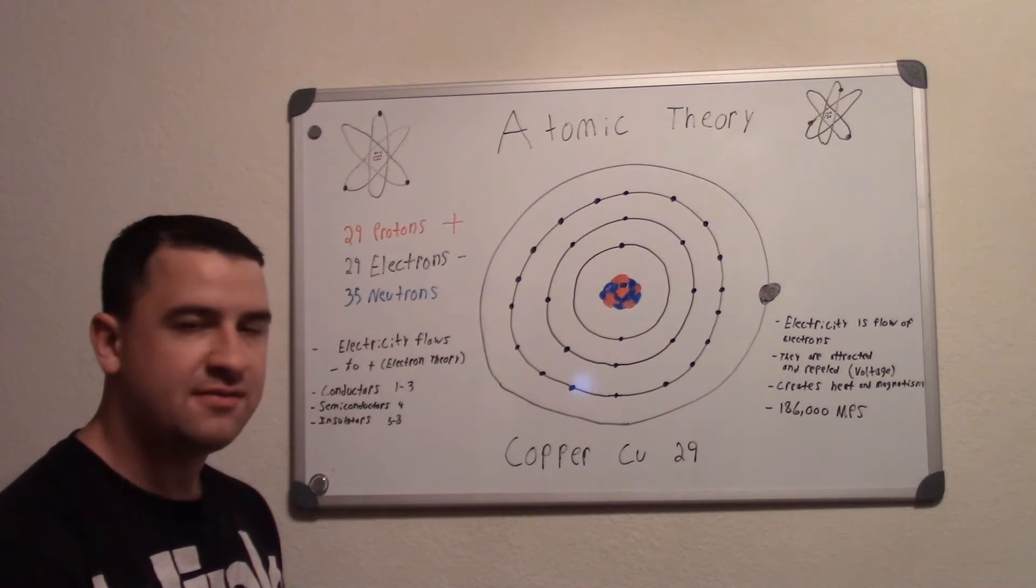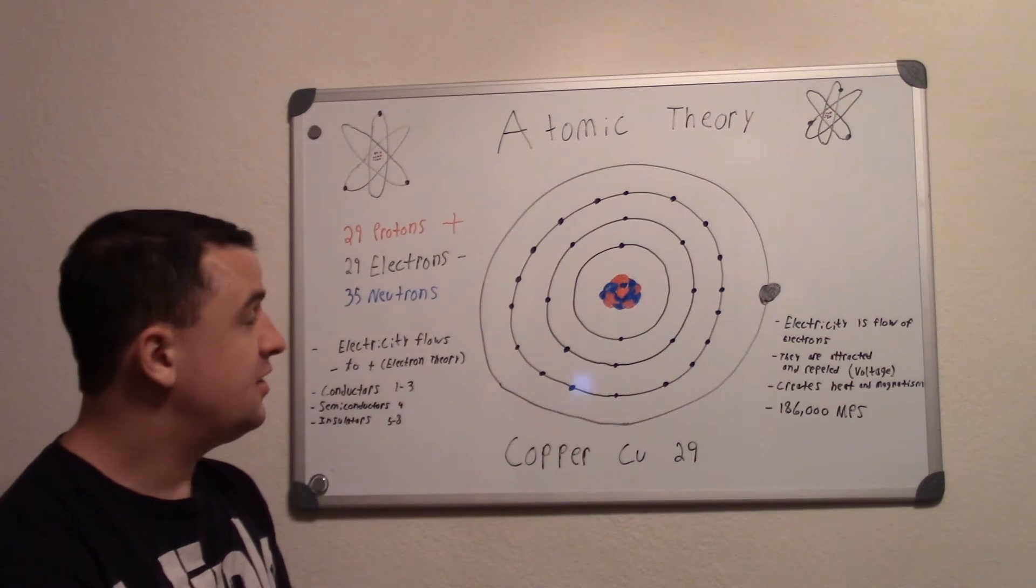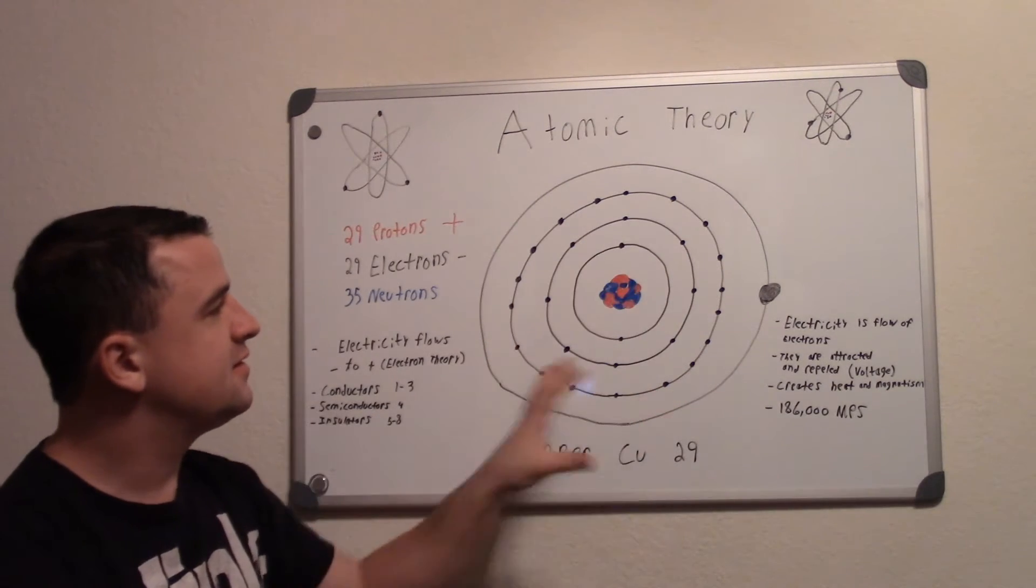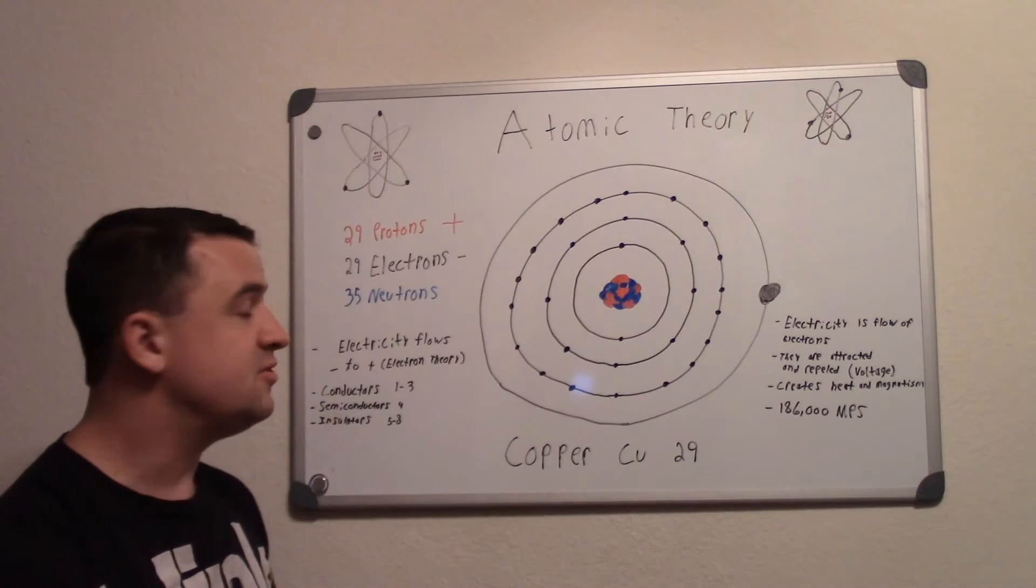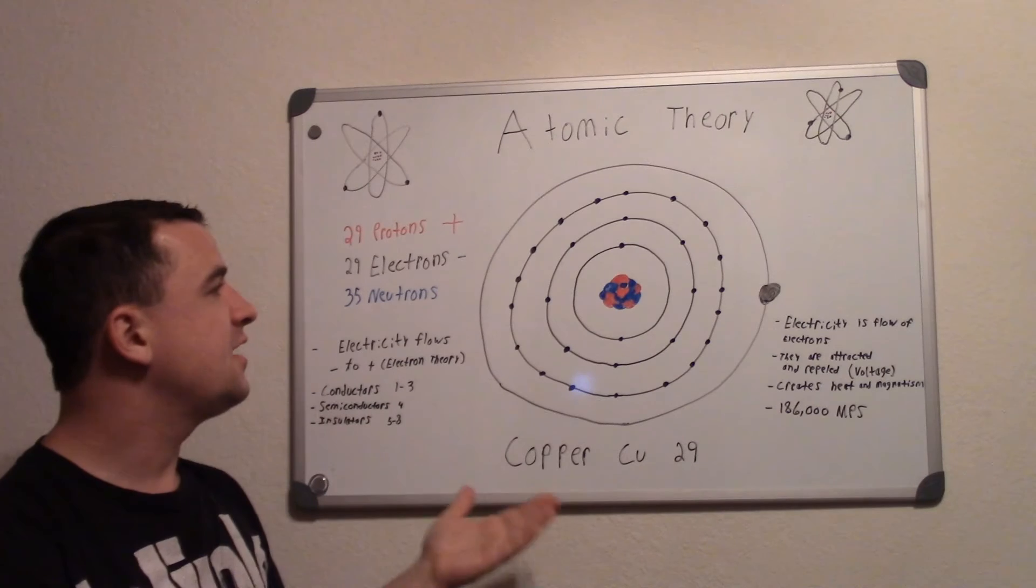If you take an item and you cut it in half again and again and again, you can go down into a very small element and this is its basic atomic size. You can even go more deep into these and that's when you get into subatomic particles, but this is a basic atom.